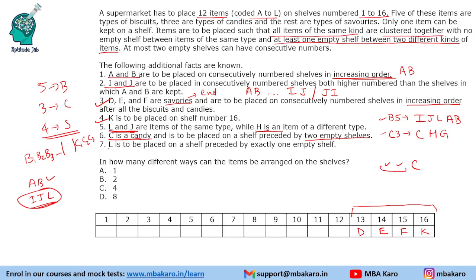L is to be placed on a shelf preceded by exactly one empty shelf, so L is the first biscuit. Now we can either put biscuits first and candies second, or candies first and biscuits next — savouries always come last. Let us make both cases and see how the arrangement works.